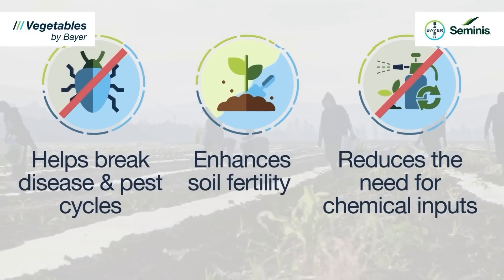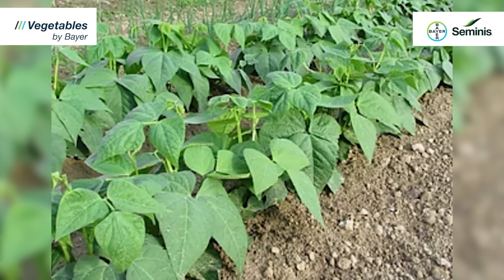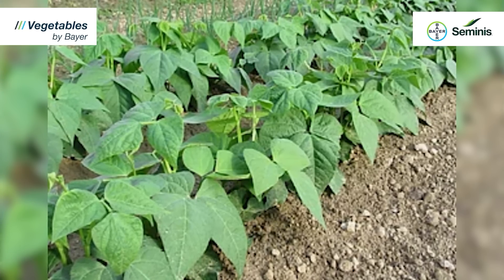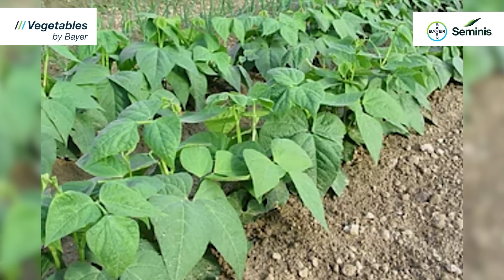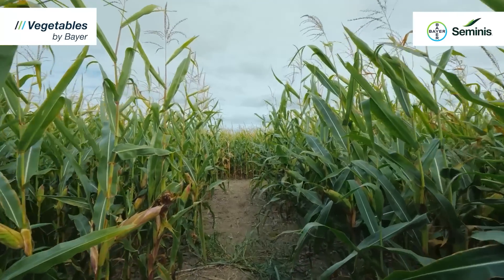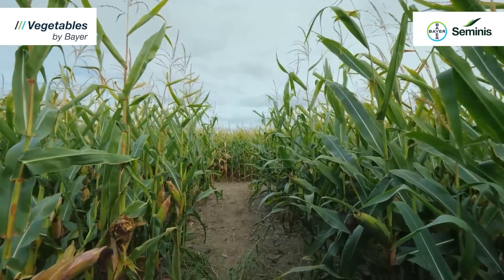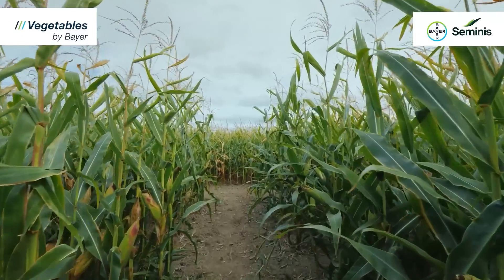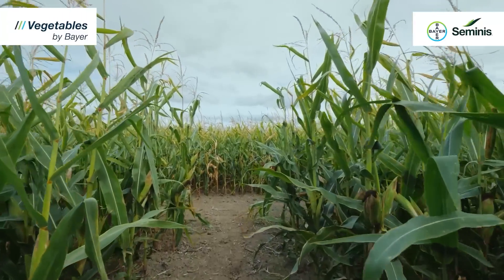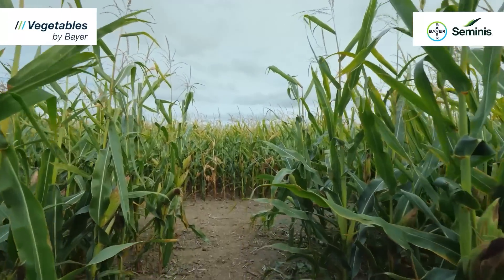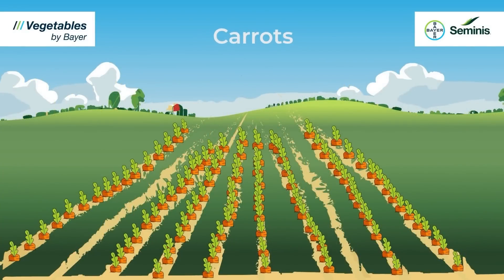For example, you can start by planting legumes like beans or peas which fix nitrogen in the soil. This can be followed by a cereal crop like maize that takes advantage of the soil nutrients left by the legumes. And then, you can plant a root crop like carrots or potatoes which can break up the soil and help prevent soil-borne diseases.